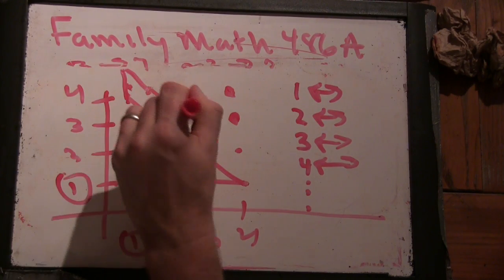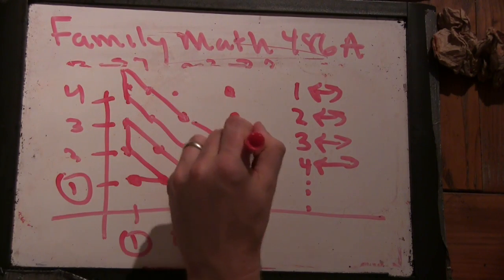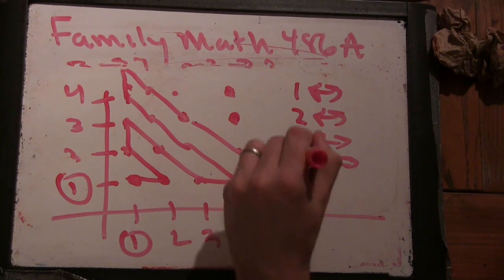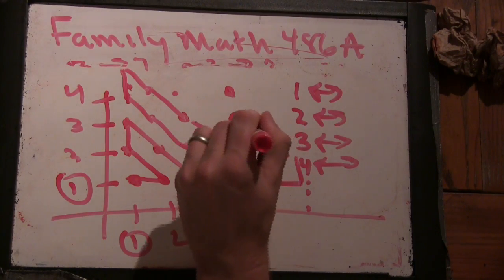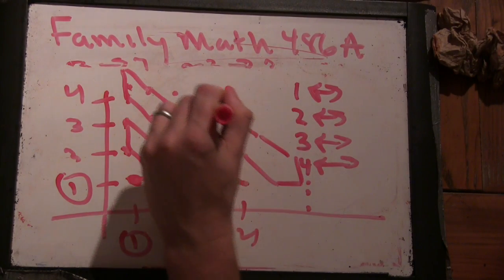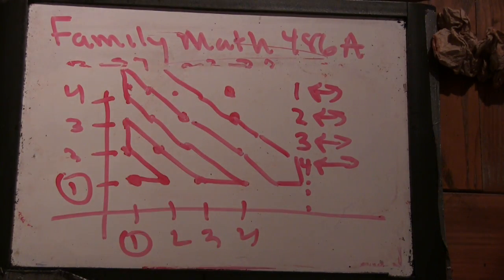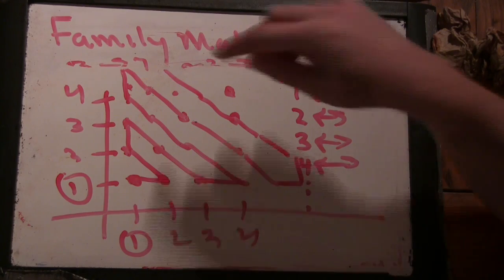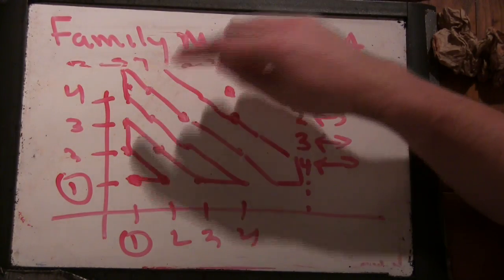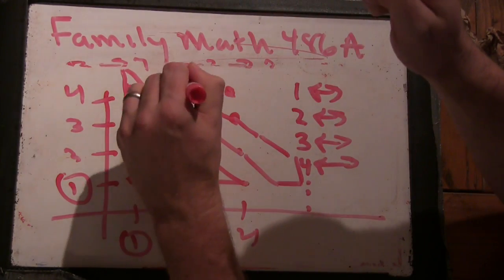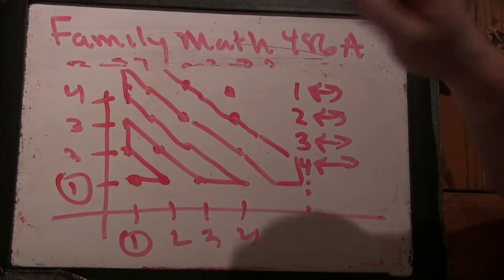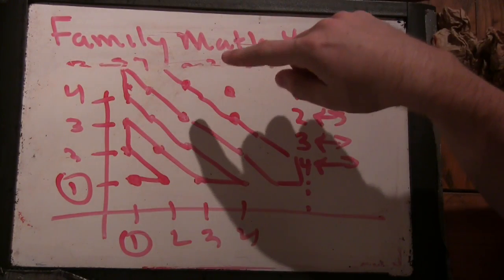Twelve, thirteen, fourteen, fifteen, sixteen, seventeen, eighteen, nineteen, twenty, twenty-one. You snake through the grid, and if I were to put each dot in the right place, you make the snake.